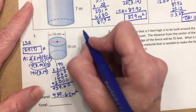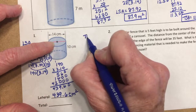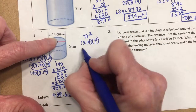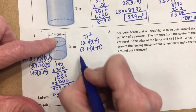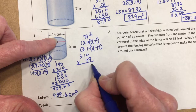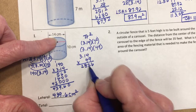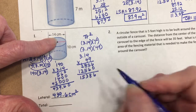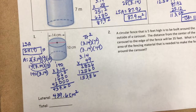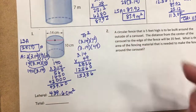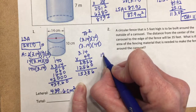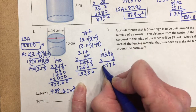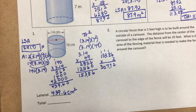Now find the total surface area by adding the two circles. Area of one circle is pi r squared: 3.14 times 7 squared equals 3.14 times 49, which is 153.86. Two circles: 153.86 times 2 equals 307.72.